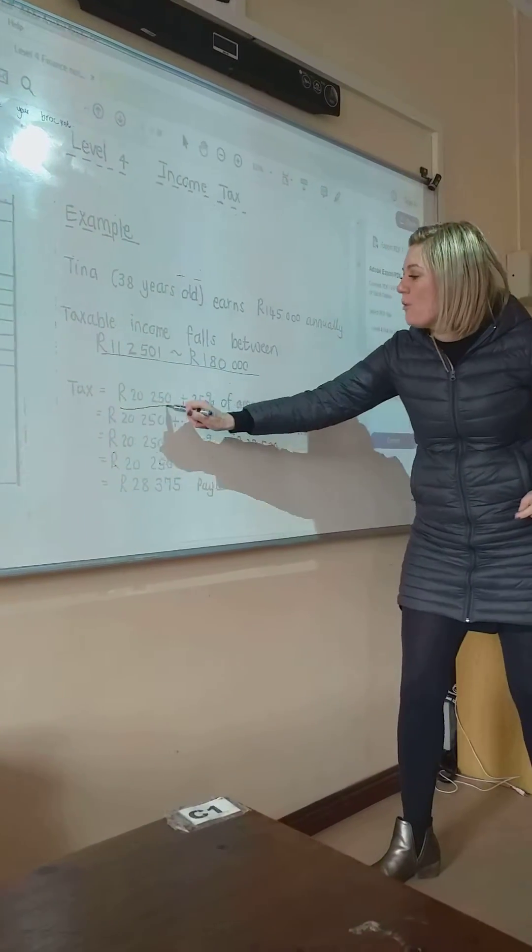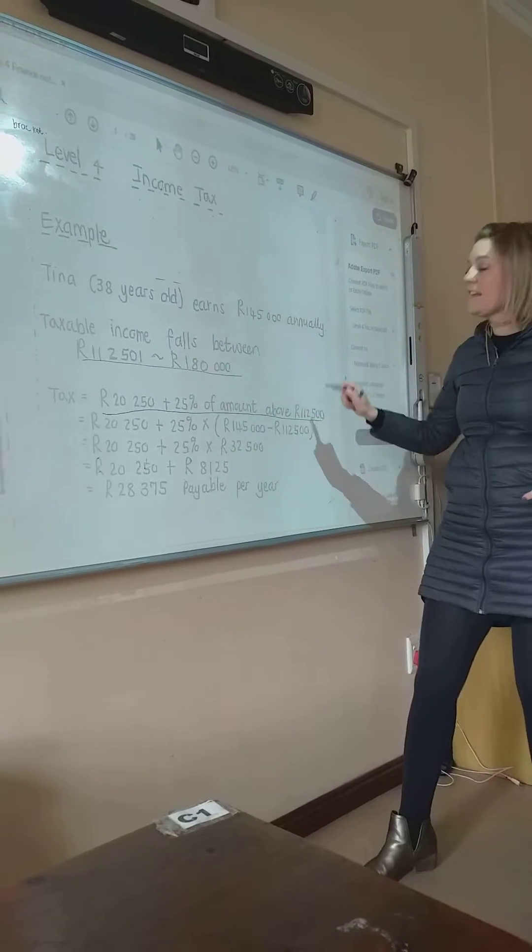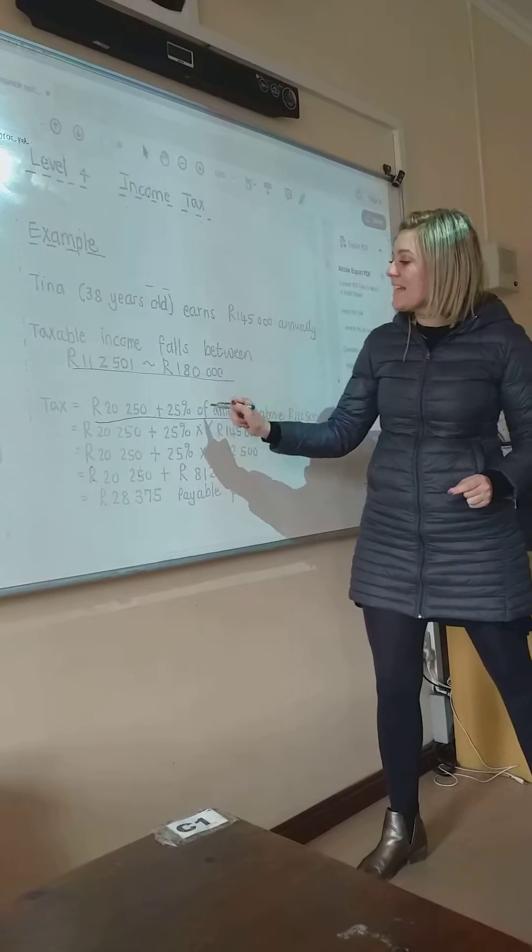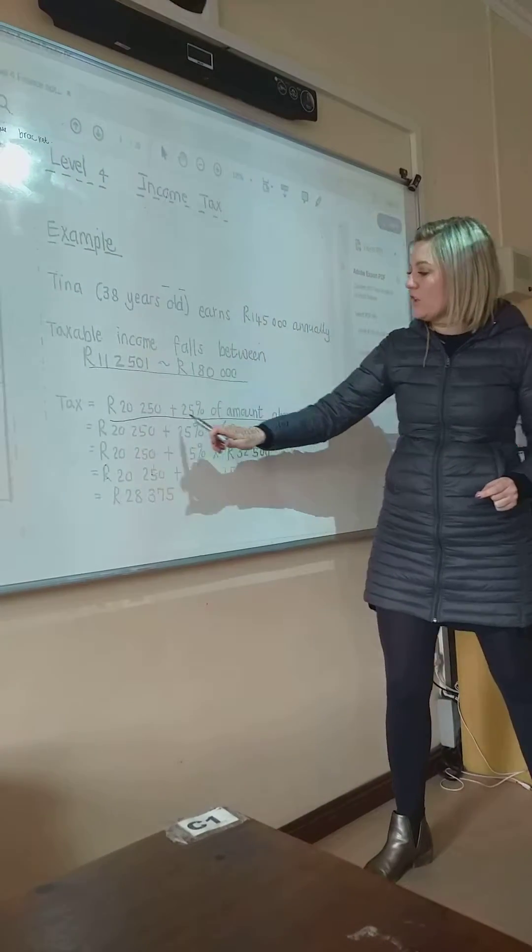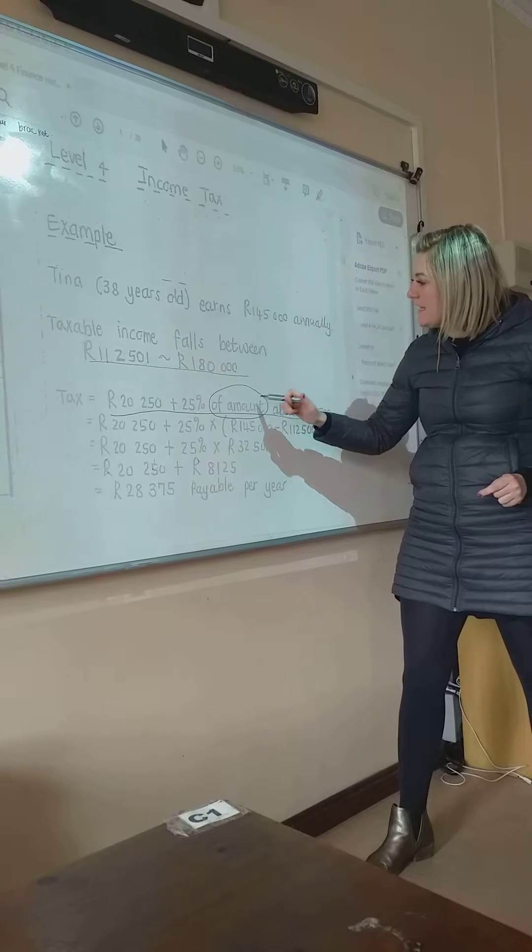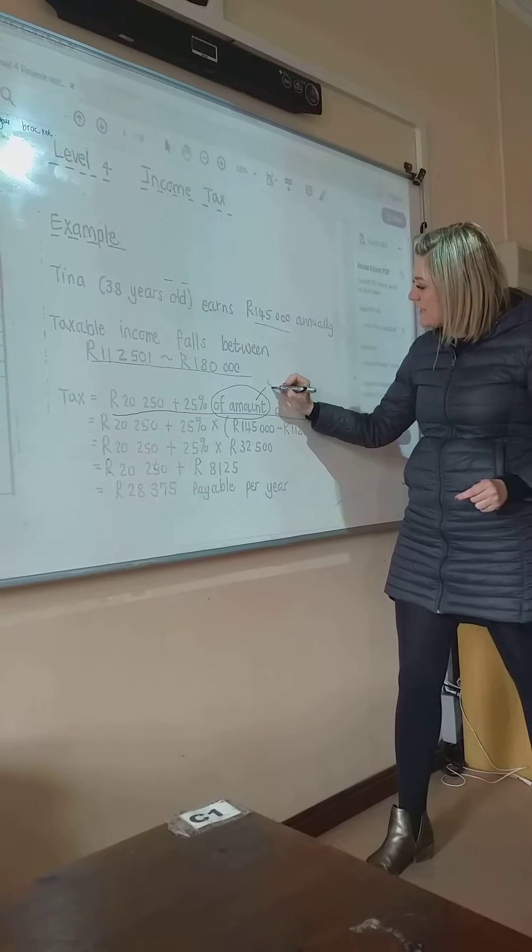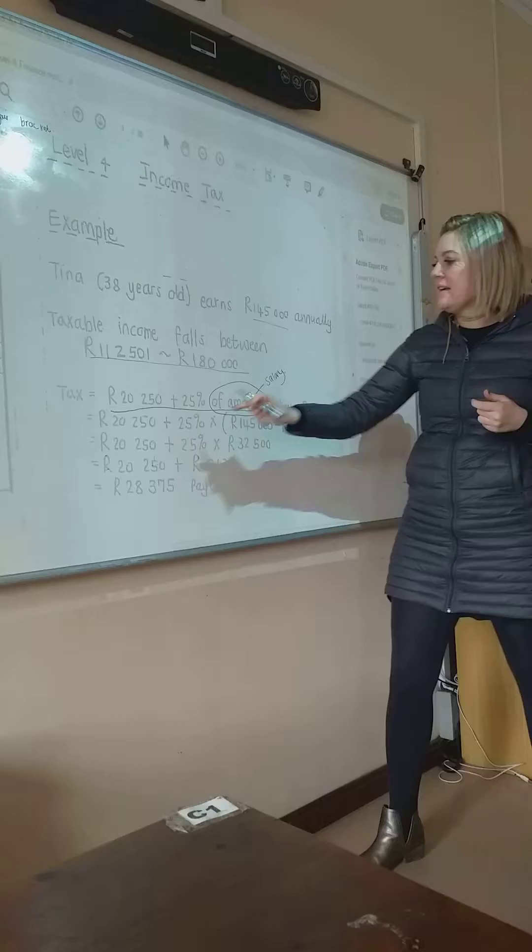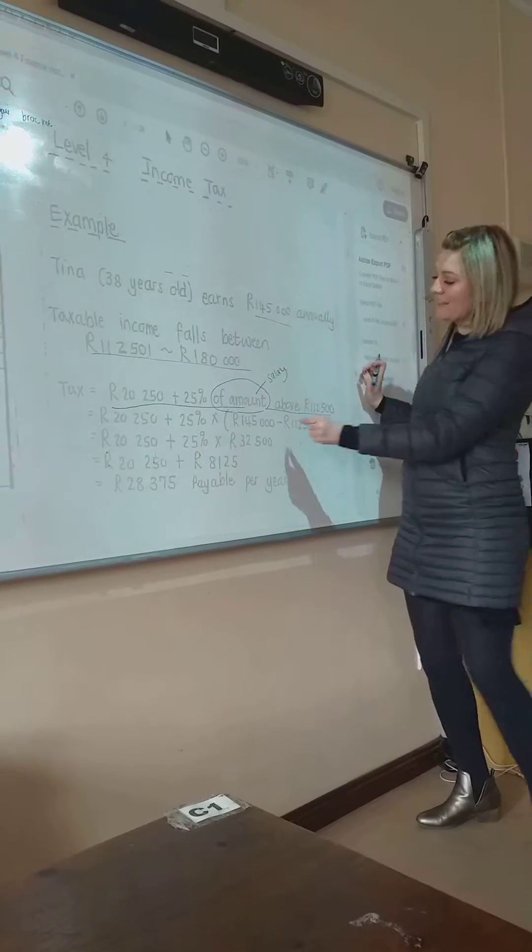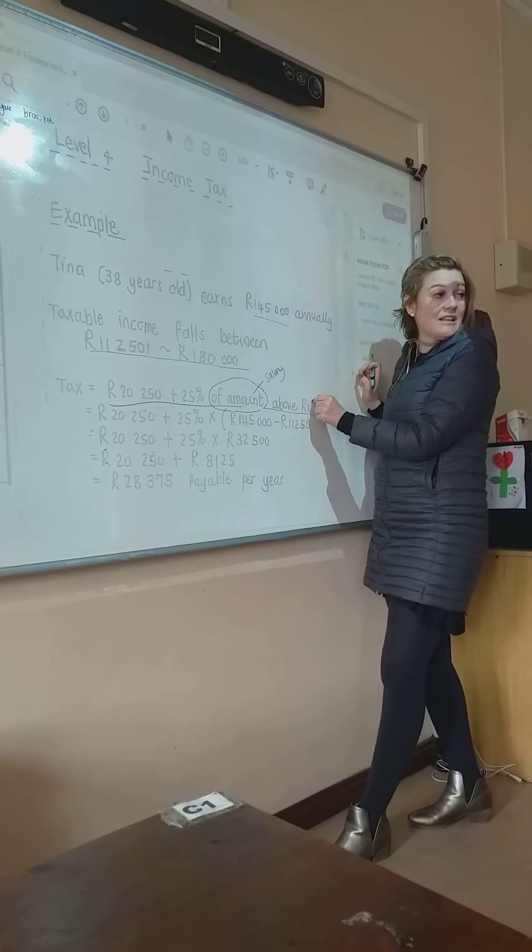According to that, this is the formula we use. It comes from the tax table, the rebate table. They say, look here, this is what they give you, of the amount. The of amount is the salary. Can you see that? Look in the next line. Plus that of the salary above that. So you deduct whatever is in the formula.